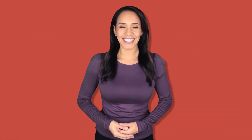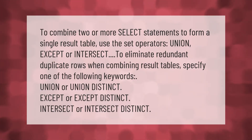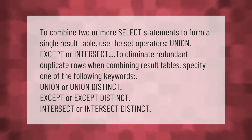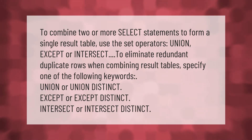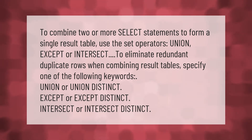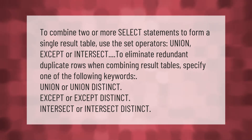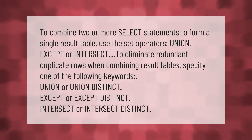To combine two or more SELECT statements to form a single result table, use the set operators UNION, EXCEPT, or INTERSECT. To eliminate redundant duplicate rows when combining result tables, specify one of the following keywords: UNION or UNION DISTINCT, EXCEPT or EXCEPT DISTINCT, INTERSECT or INTERSECT DISTINCT.